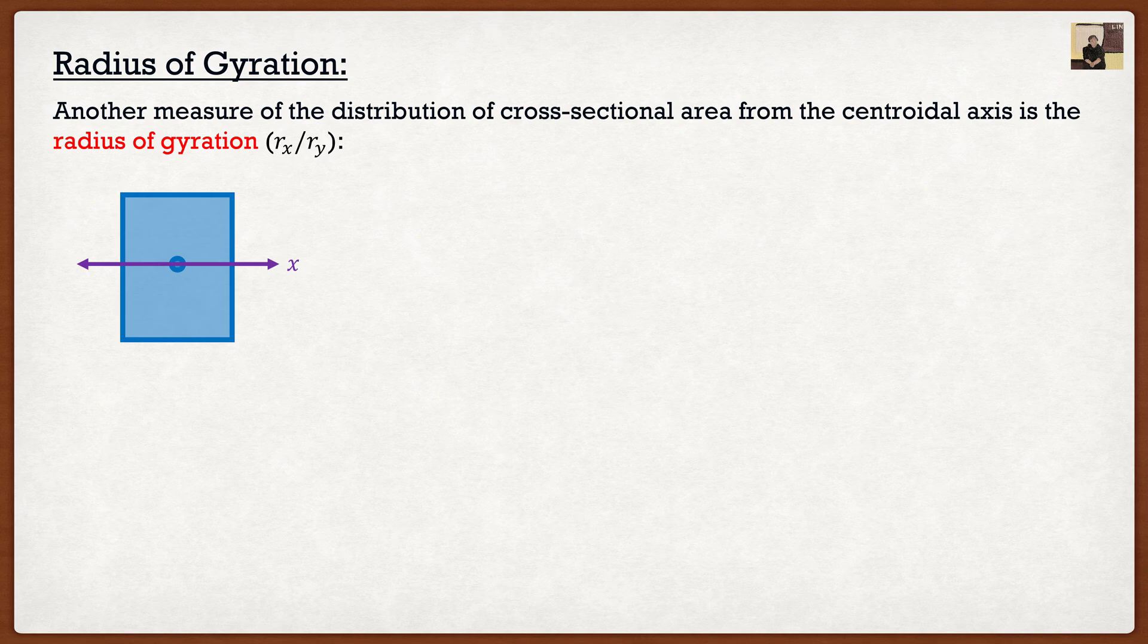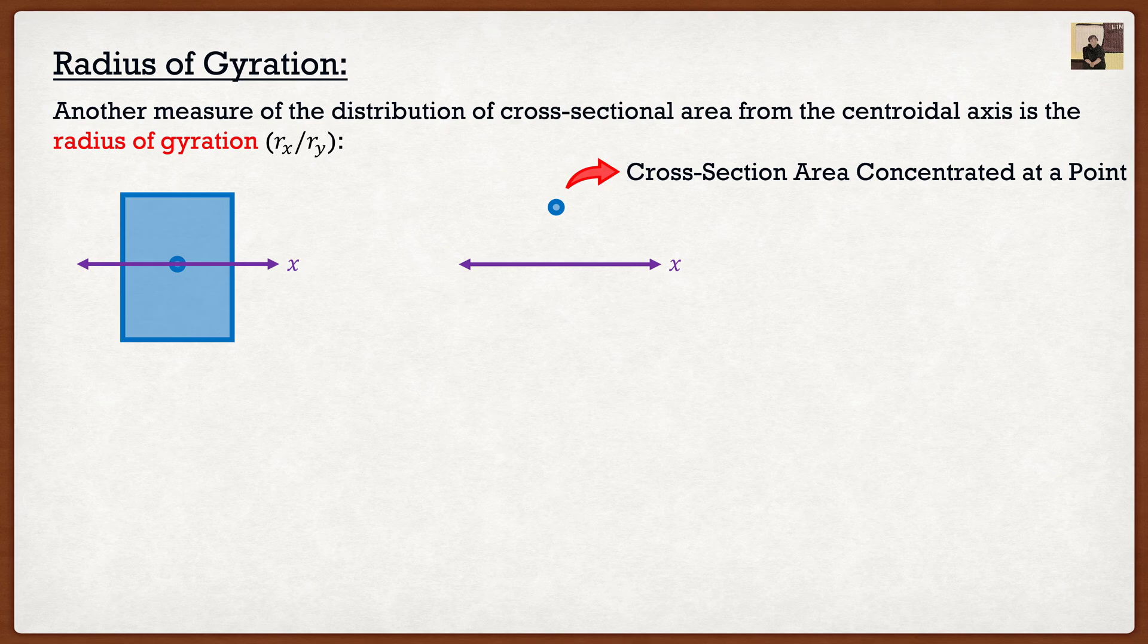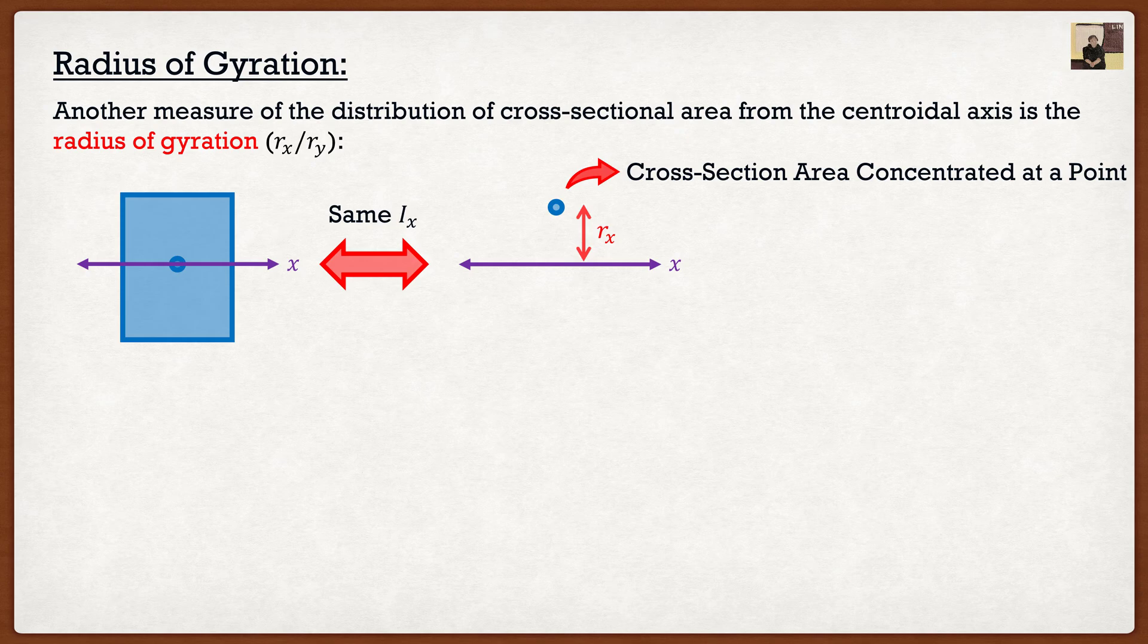Now we're going to take this and express it in an equivalent system. So rather than having an actual rectangle, I'm going to take it and just express it as a point. Now this point right here is the entire cross-sectional area of the shape on the left concentrated in a single point. And here's the trick. What I want is I want both of these scenarios to have the same moment of inertia. So we know that in order to get this point to have the same moment of inertia as the shape on the left, we're going to have to specify a distance. And this distance right here, that's actually the radius of gyration.